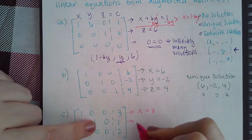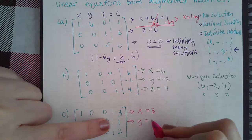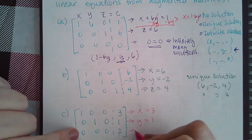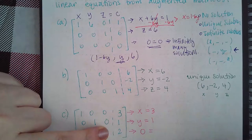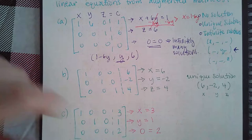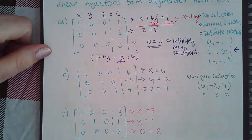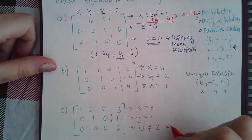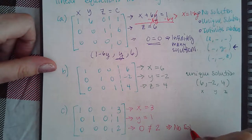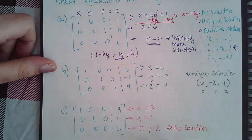And then here you have no x's, no y's, and no z's—so nothing on the left hand side, but then you have 2 on the right hand side. Now unfortunately, 0 does not equal 2, which means that this one has no solution. When you get a contradiction like this, 0 does not equal 2, that's called a contradiction.